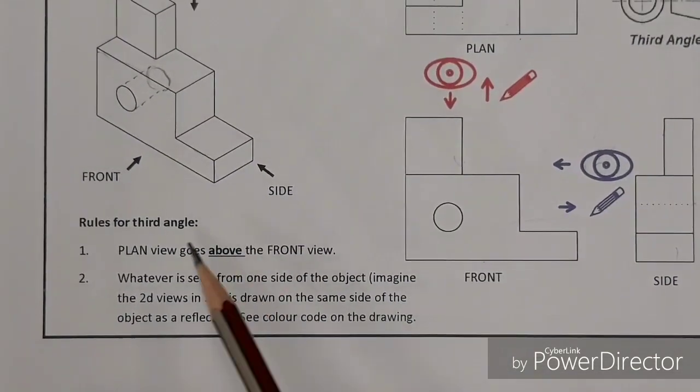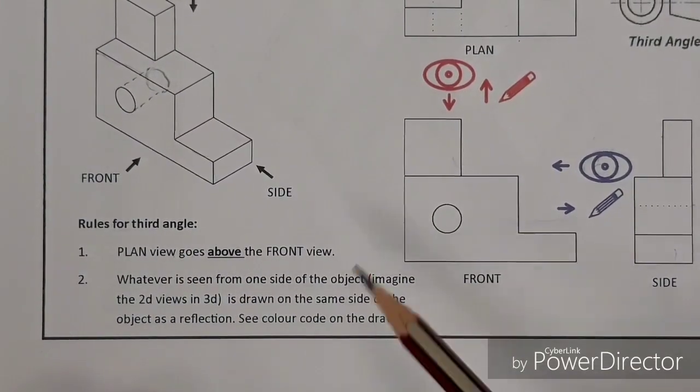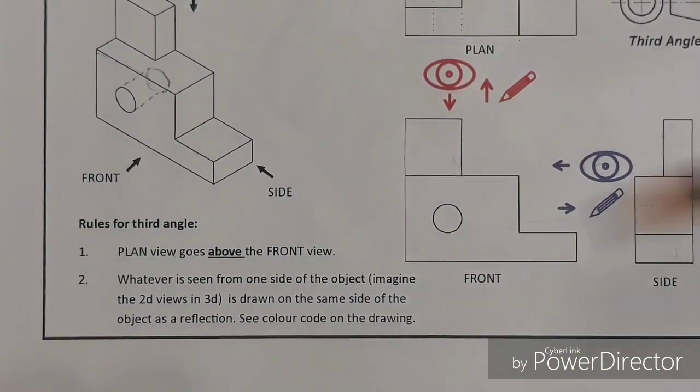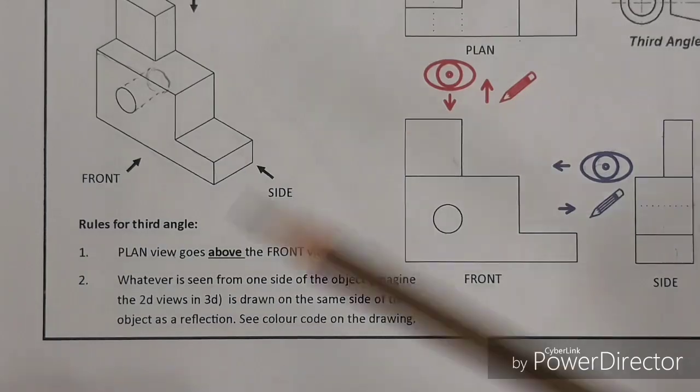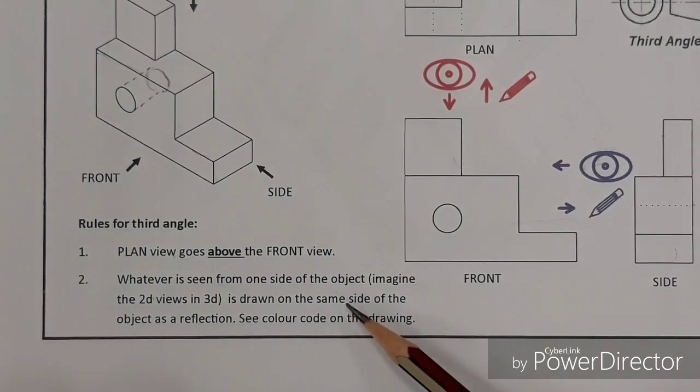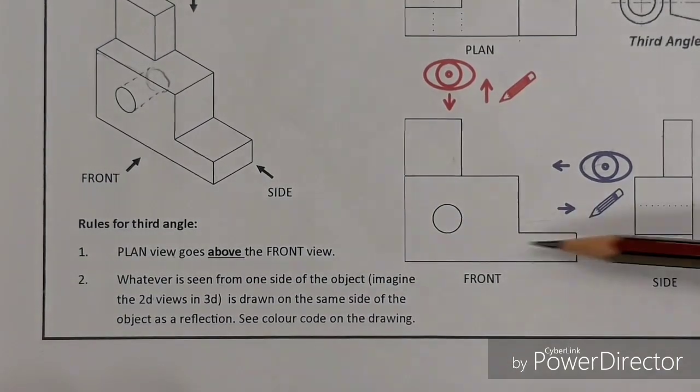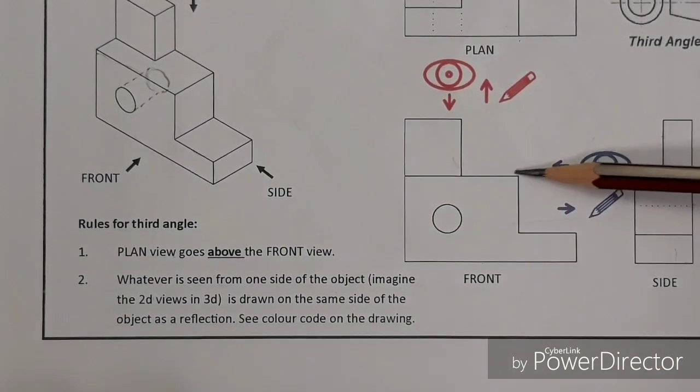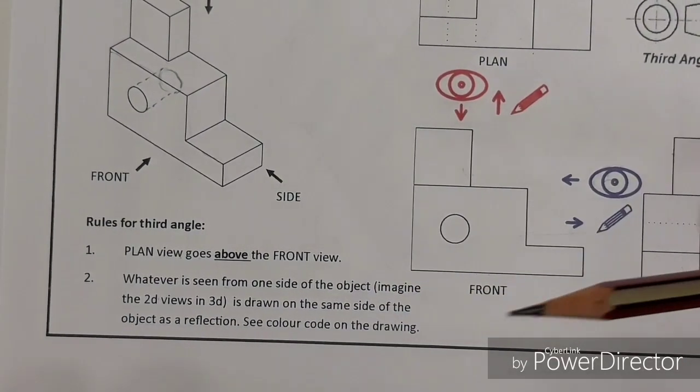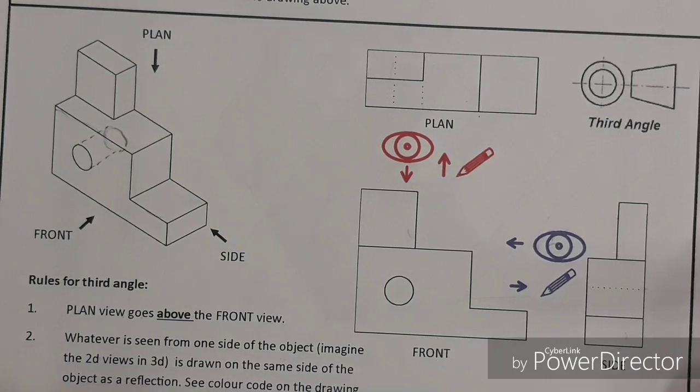Rules for third angle: the plan view should go above the front view, never below. If it's below, the chances are it's going to be a first angle drawing. Whatever is seen from one side of the object, imagine the 2D views in 3D, is drawn on the same side of the object as a reflection. It's almost like what you see from there, you reflect it, and you draw it in this particular direction. Very important that you understand this.